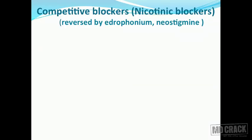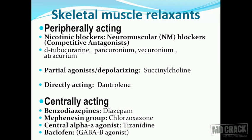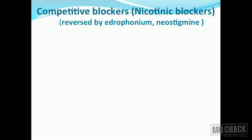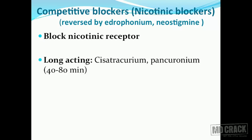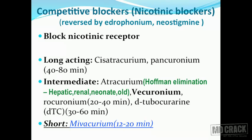The most important group of peripherally acting agents are the nicotinic blockers - the competitive blockers of the nicotinic receptor. Whatever competitive block is produced by these agents can be reversed by edrophonium and neostigmine. Competitive blockers are classified into long acting, intermediate acting, and short acting. Long acting: cisatracurium and pancuronium, with a duration of 40 to 80 minutes. Intermediate acting: atracurium, vecuronium, rocuronium, and D-tubocurarine. D-tubocurarine acts for about 30 to 60 minutes; the rest act for 20 to 40 minutes.